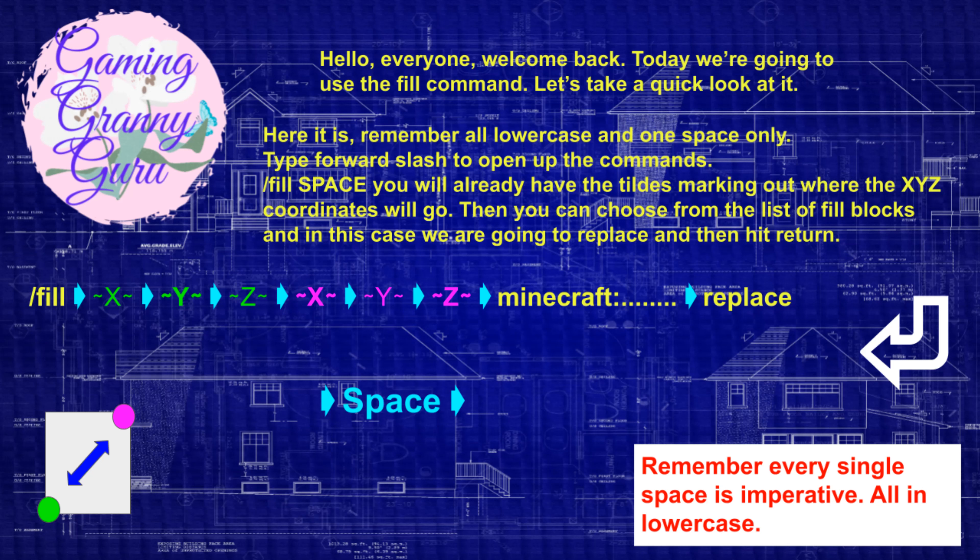I've gone down three blocks here and I've taken the coordinates. Now I'm going to head across to this corner and take the coordinates of this block. So what you want to do is make sure you're standing smack bang in the center of the block and look down towards it. Get your crosshair in the center and look at it, and then we press F3.